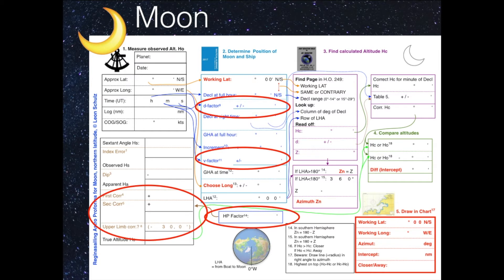And if you use the upper limb, you have to deduct 30 minutes, because those 30 minutes represent the diameter of the moon. Then we have the HP factor found at the bottom, which is also on the daily pages, so it's not difficult to find. We use that to determine which second correction to apply. It looks more complicated than it is, and thanks to the template I've made, we shouldn't forget any corrections.